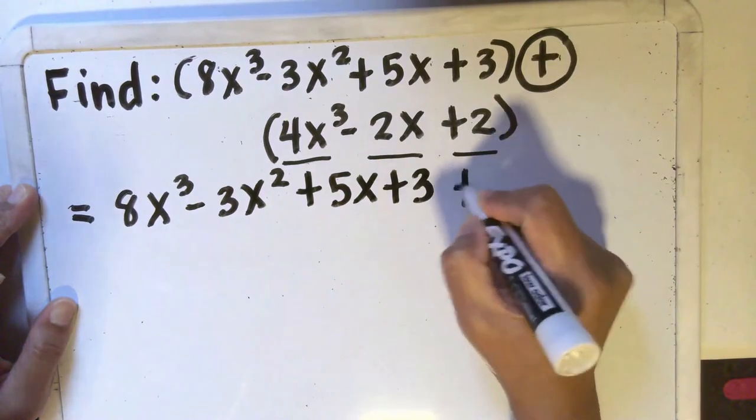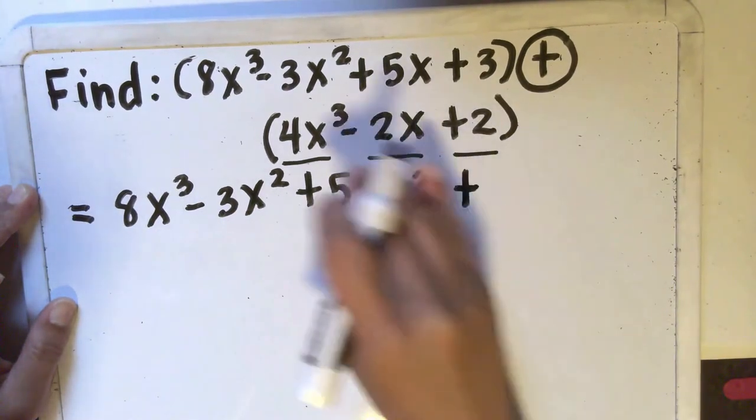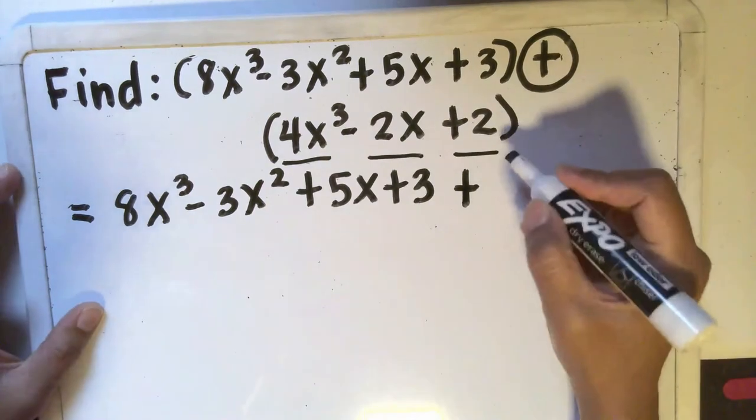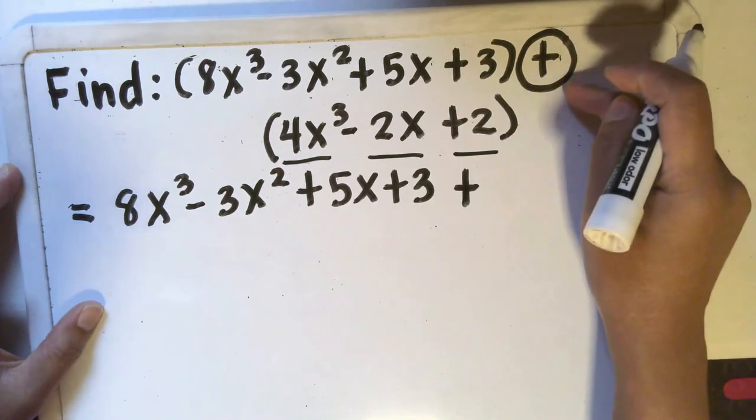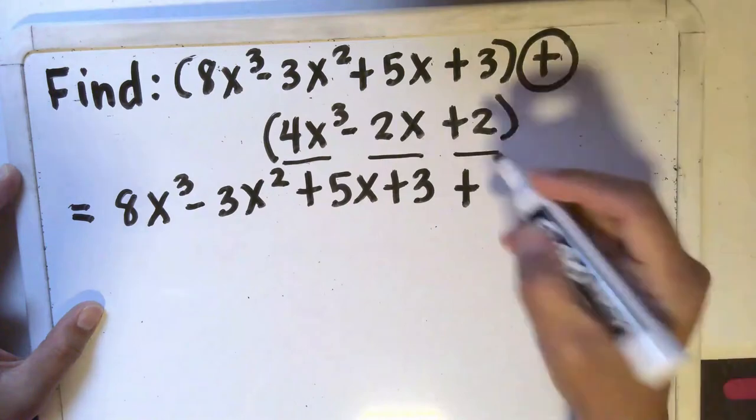And then I will add that first expression to the second expression but this time I don't have to write the parentheses since when I distribute that plus sign the signs of each of these terms will stay the same. So I'll have 4x³ - 2x + 2.